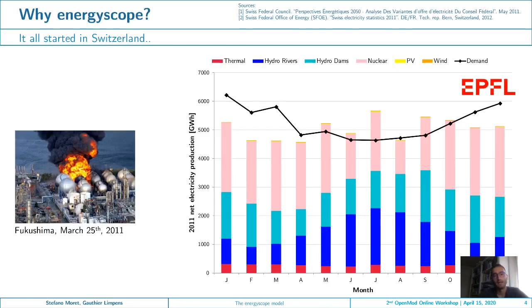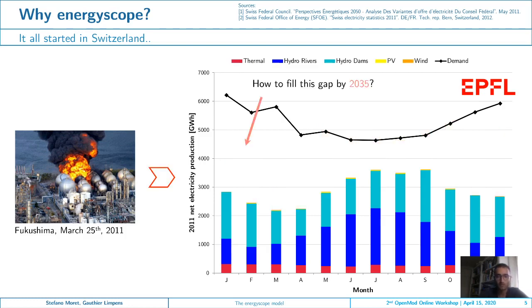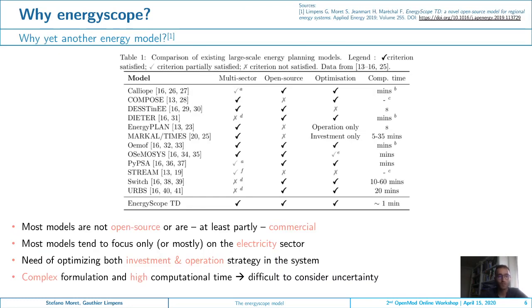It all started in Switzerland. After the Fukushima nuclear accident in 2011, Switzerland decided to phase out its nuclear power plants, which as you can see from the graph were providing around 40 percent of its electricity production back then. The phasing out of nuclear power opened a very big debate on how to fill the gap left by nuclear power by 2035, and that's where the development of the Energy Scope model started.